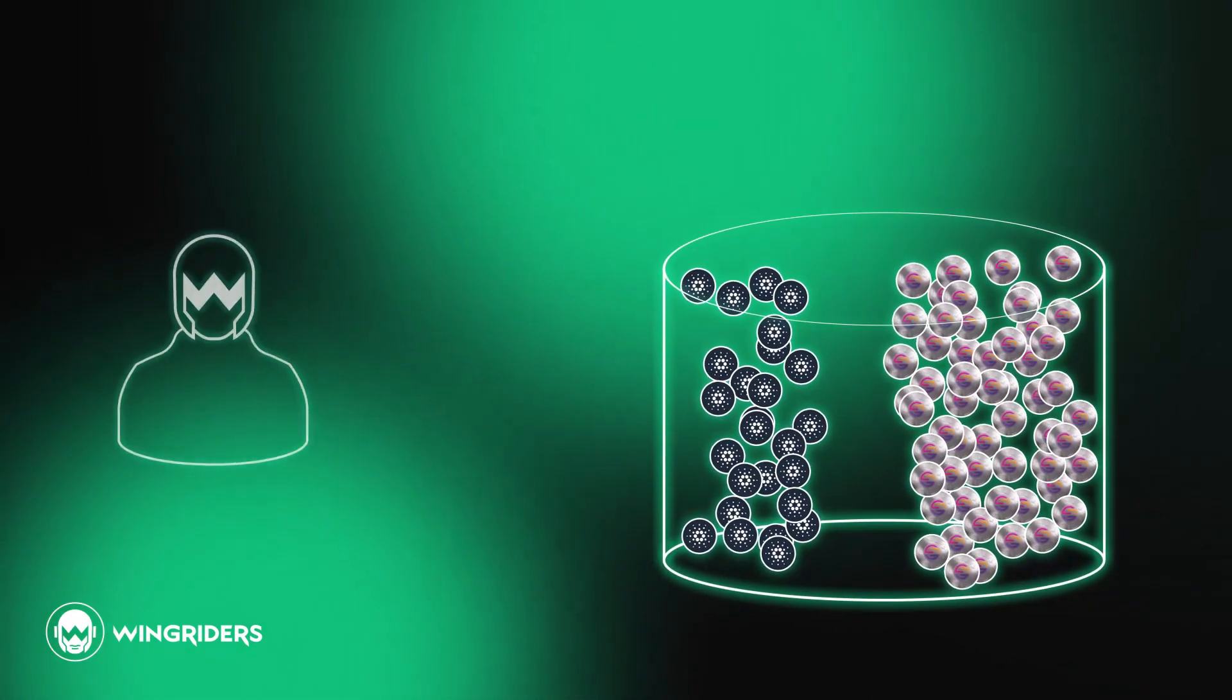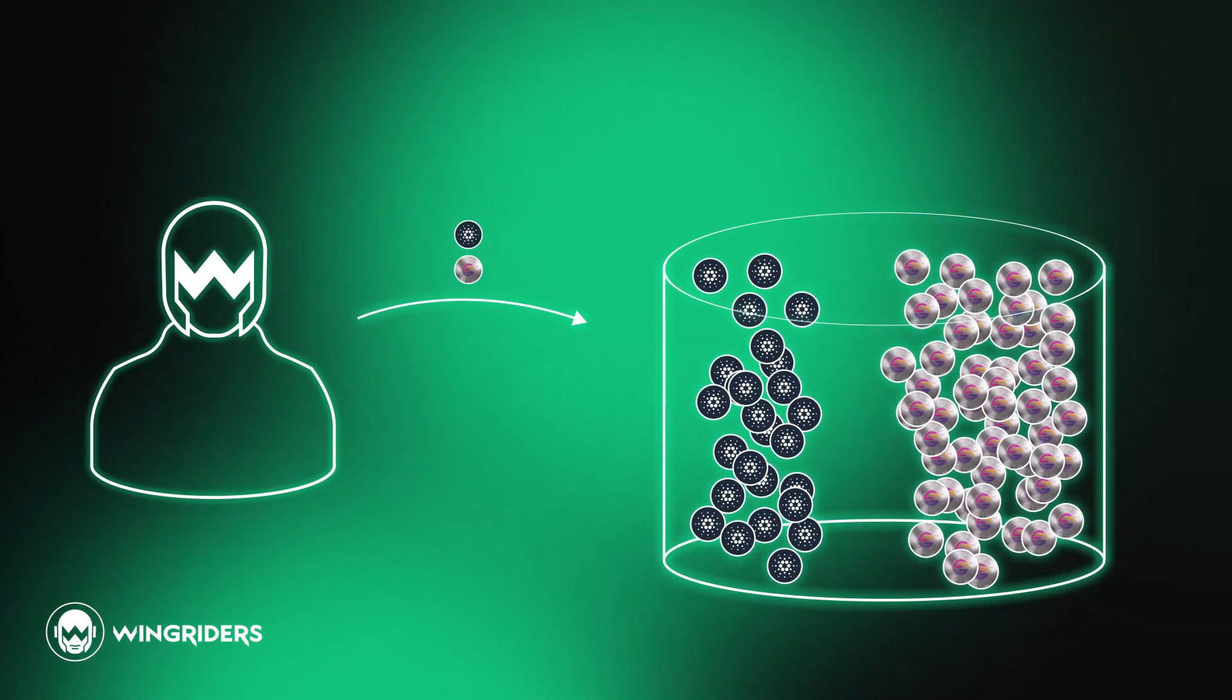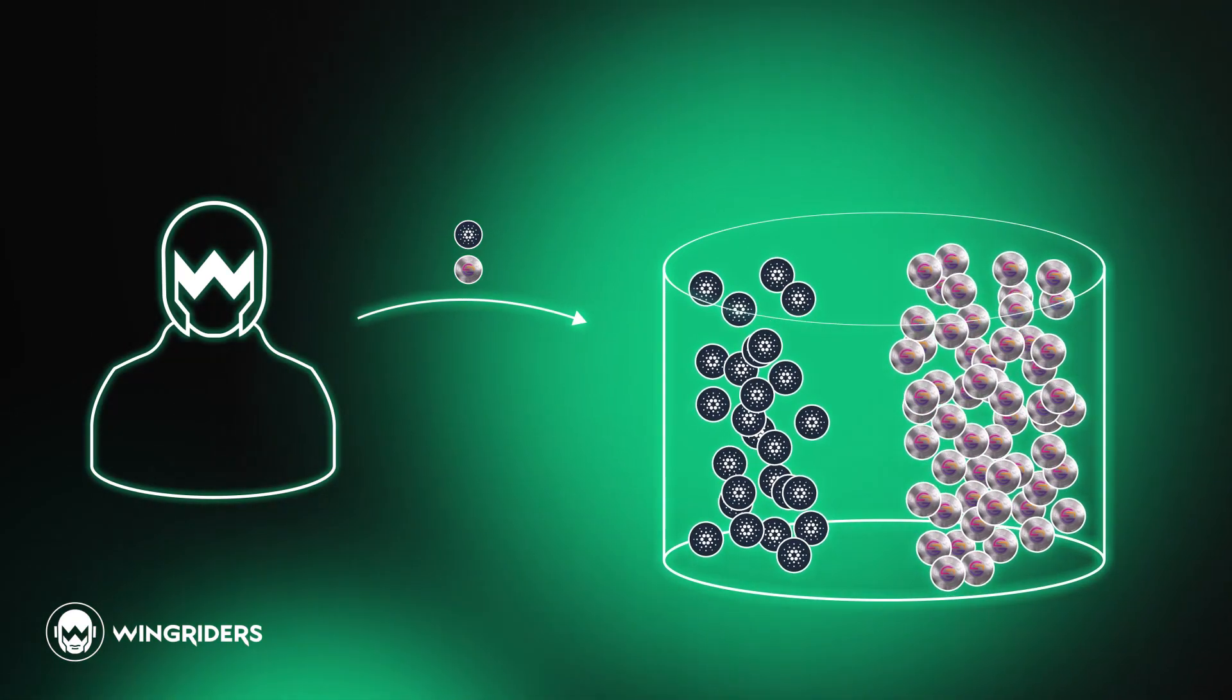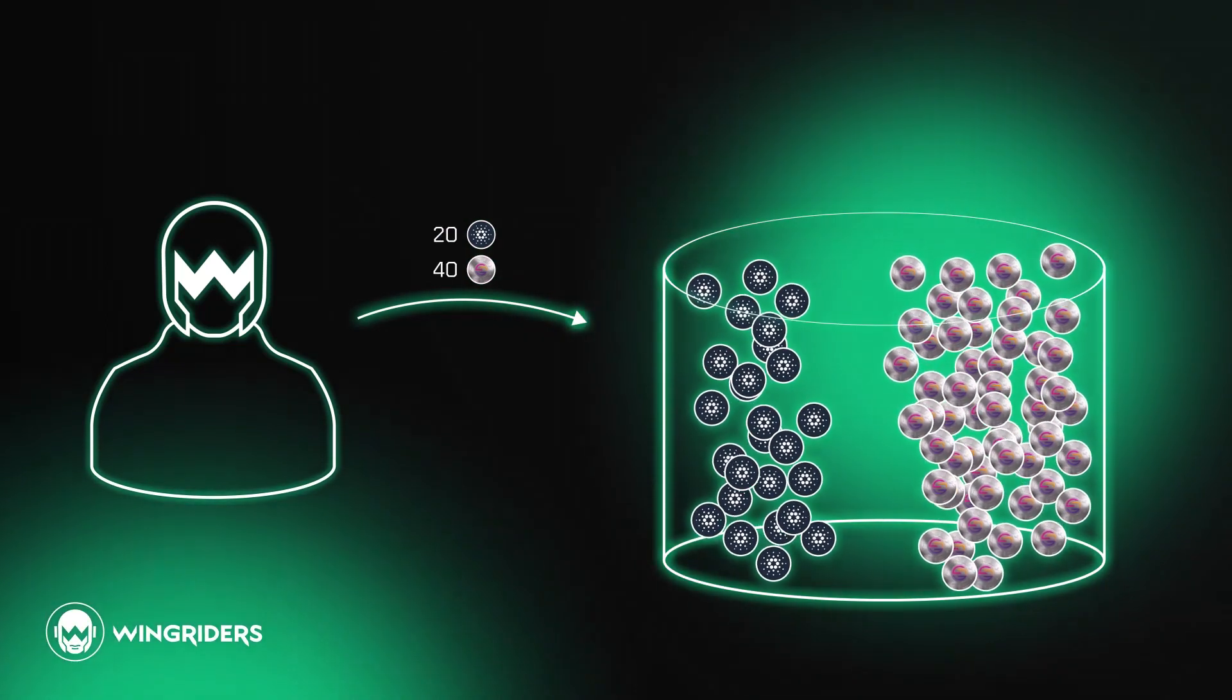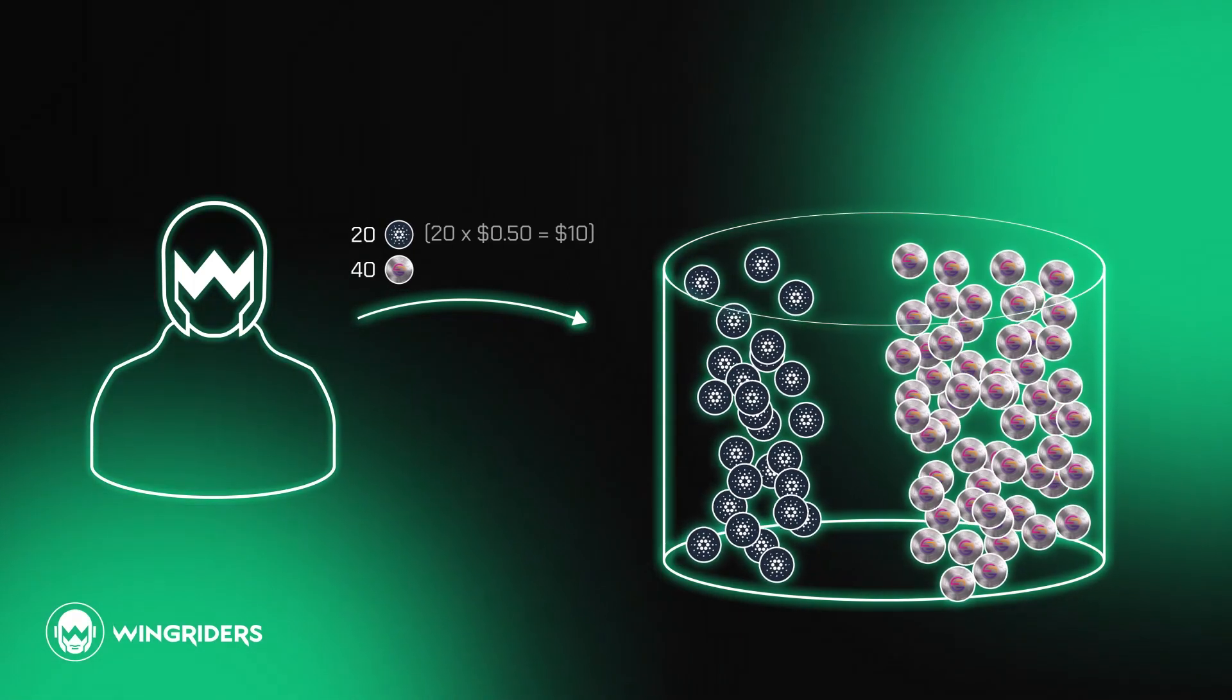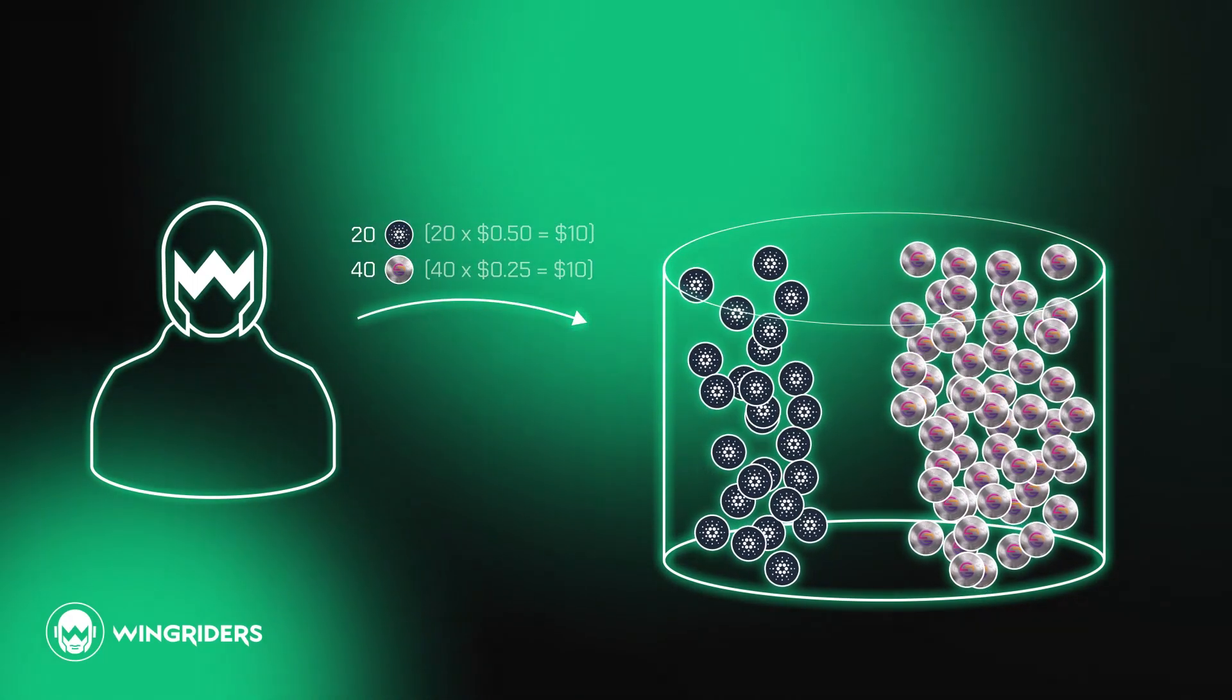Now imagine you, as a liquidity provider, deposit ADA and WMT into the pool to gain from the trading fees and ADA staking rewards. The liquidity you deposit must also be in a 50-50 ratio. So let's say you deposit 20 ADA and 40 WMT. The value of deposited ADA is $10, the value of WMT is also $10. So you provided liquidity worth $20.